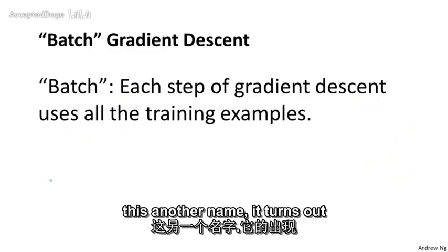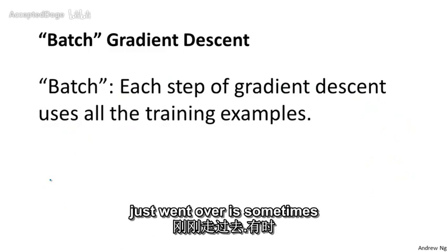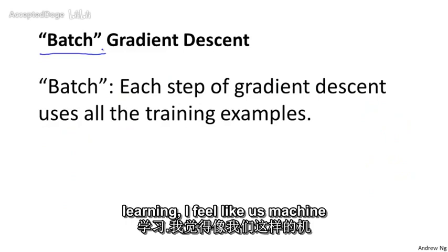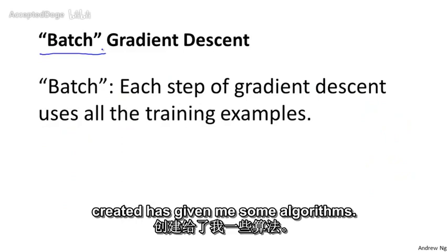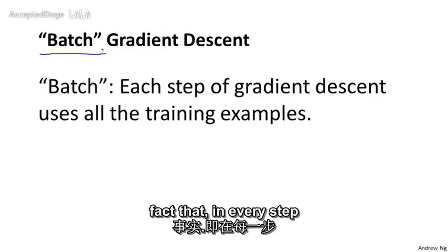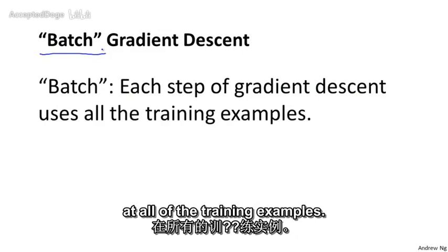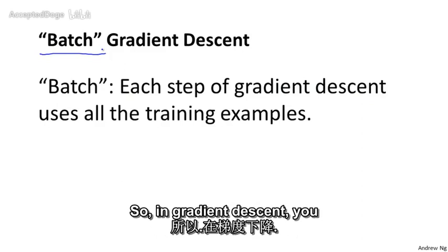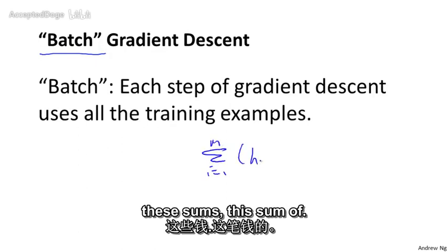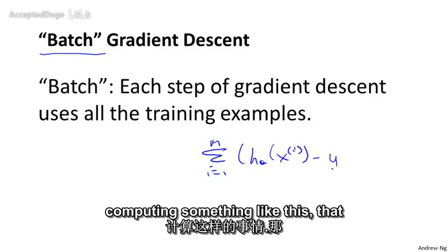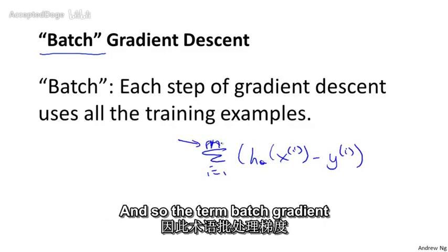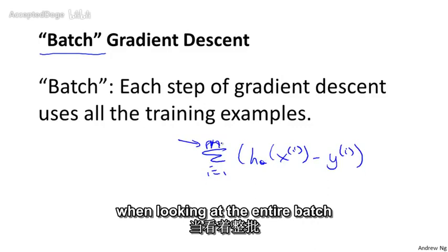Finally, just to give this another name: the algorithm that we just went over is sometimes called batch gradient descent. The term batch gradient descent refers to the fact that in every step of gradient descent, we're looking at all of the training examples. When computing derivatives, we're computing a sum — in every step of gradient descent, we compute something that sums over all m training examples. So the term batch gradient descent refers to the fact that we're looking at the entire batch of training examples.